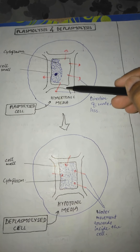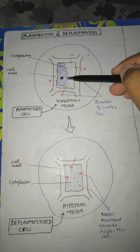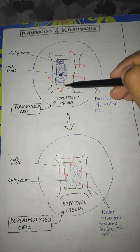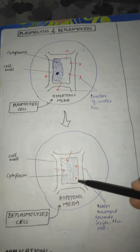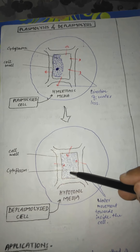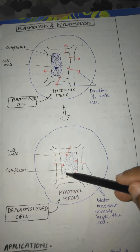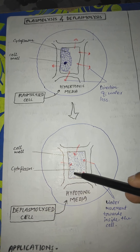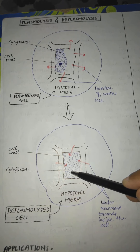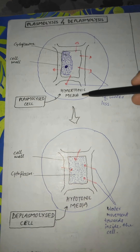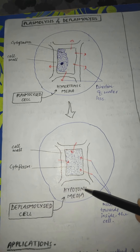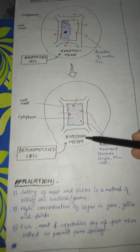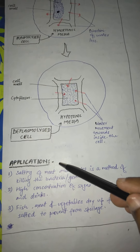So these are the two phenomena: plasmolysis and deplasmolysis. During plasmolysis, the cytoplasm of the cell shrinks and is present at one corner — these cells are called plasmolyzed cells. During deplasmolysis, the cytoplasm expands — these cells are called deplasmolyzed cells. Plasmolysis mainly occurs in hypertonic media and deplasmolysis mainly occurs in hypotonic media.